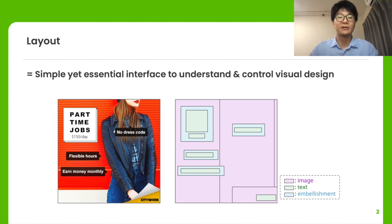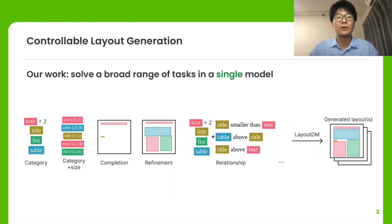Layout is a simple yet essential interface to understand and control visual design. In this work, we solve a broad range of controllable layout generation tasks in a single model as shown below. Controllable layout generation aims to synthesize plausible layouts given user-provided conditions such as the position of a specific element and the relationship between elements.